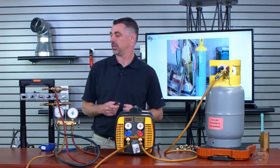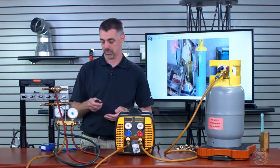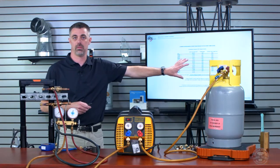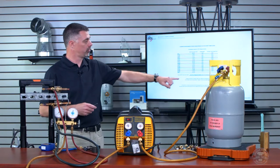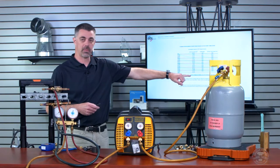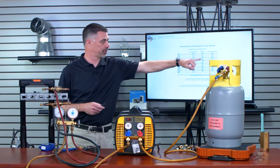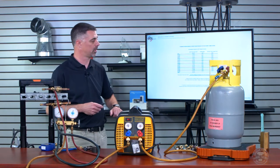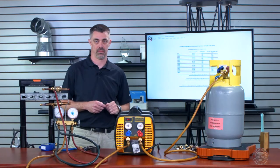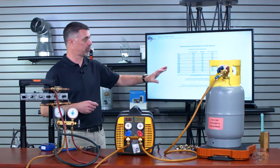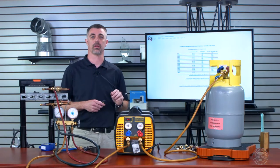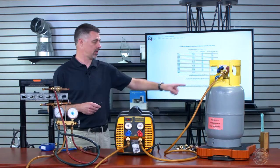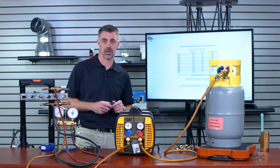To recap the formula: tank water capacity × refrigerant fill multiplier for that specific refrigerant × 0.8 = maximum refrigerant weight. Make sure you use the correct refrigerant multiplier. If the tank will be stored above 130°F, use 0.6 instead of 0.8. That note needs to be added to the downloadable sheet.